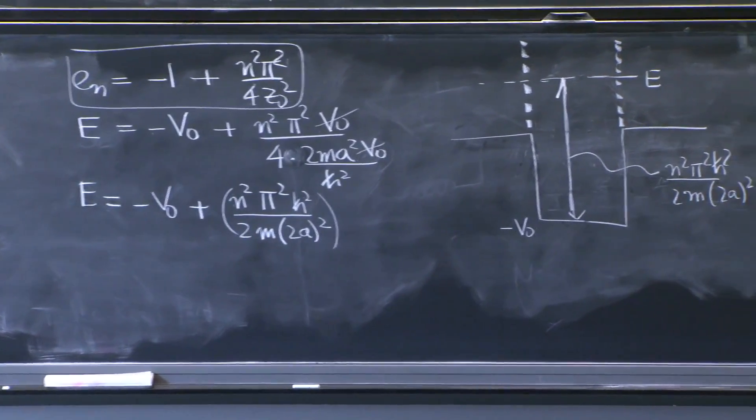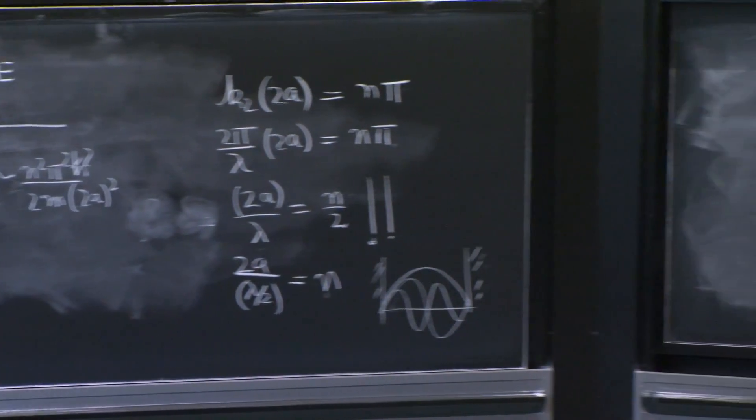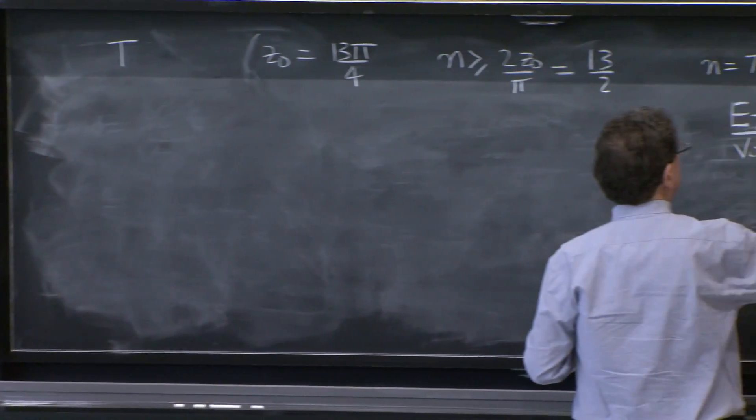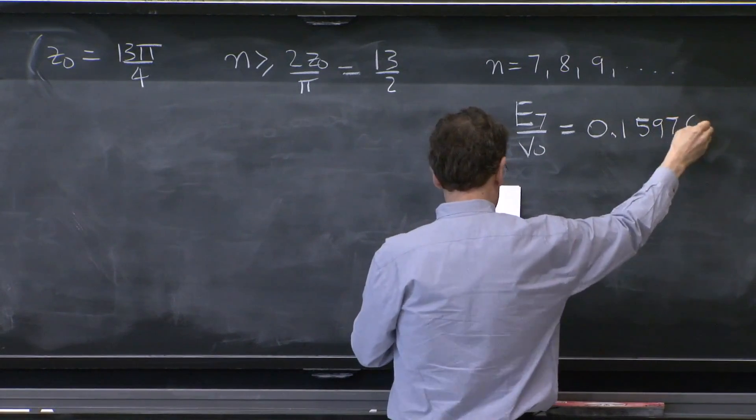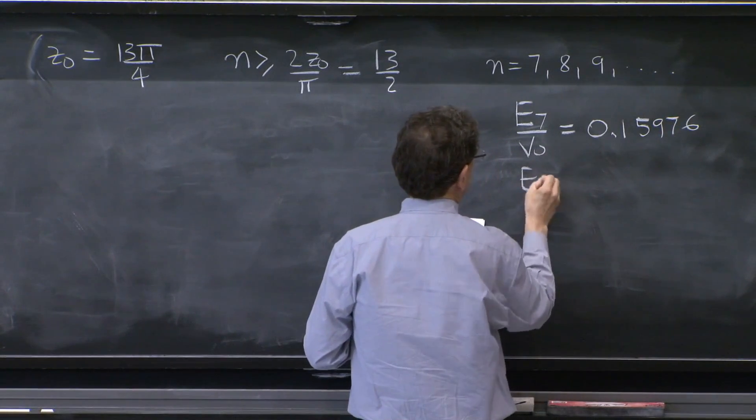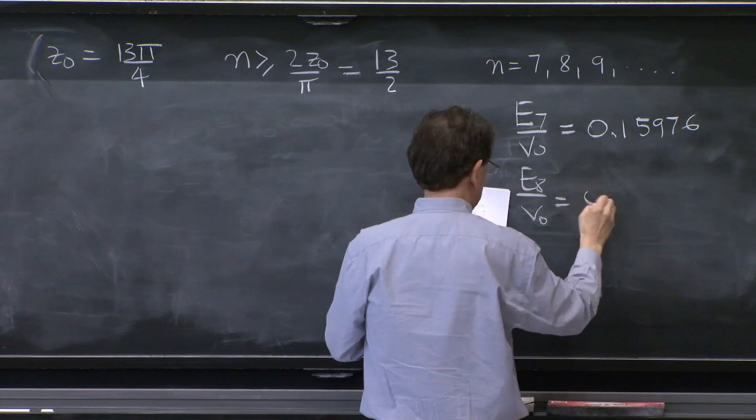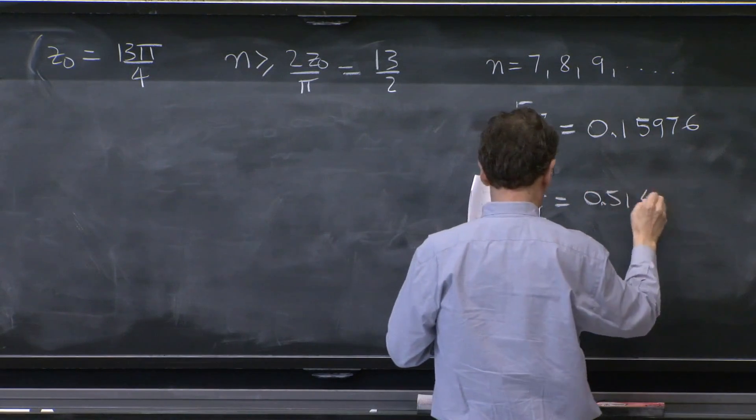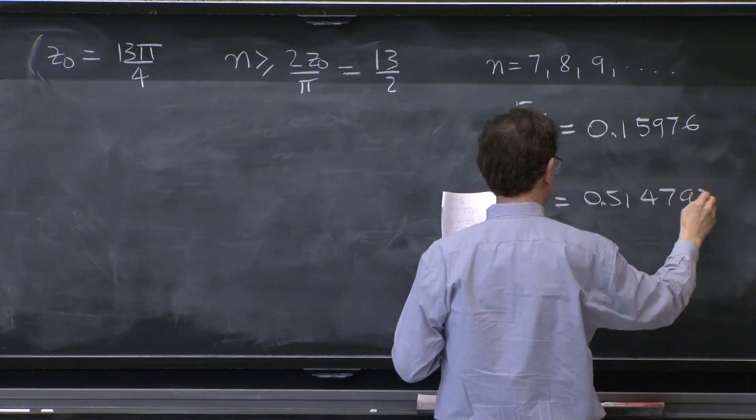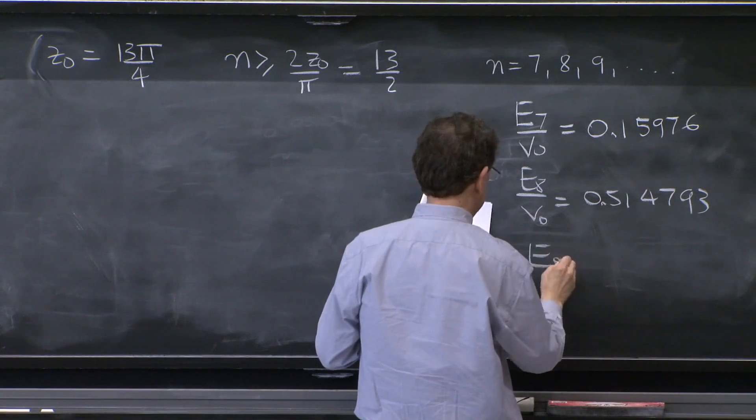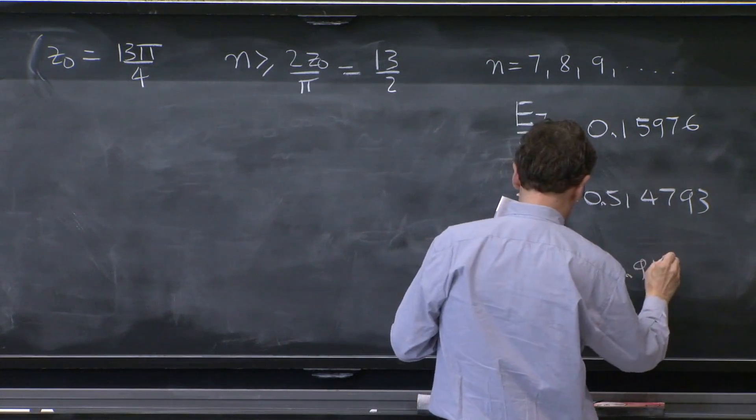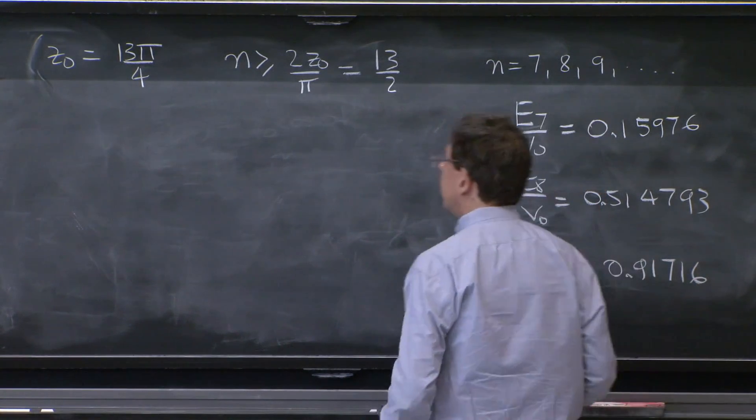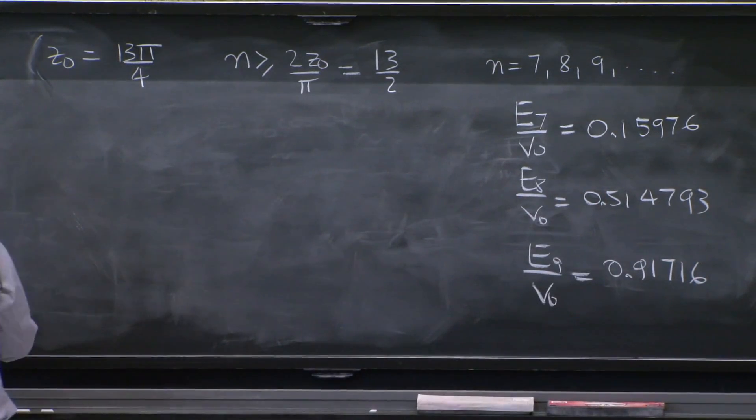So for example, e7 over v0 turns out to be 0.15976. e8 over v0 turns out to be 0.514793. And e9 over v0 is 0.91716.